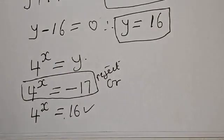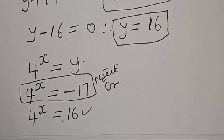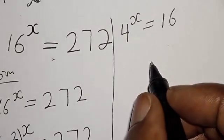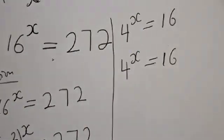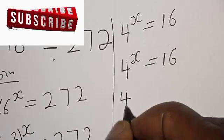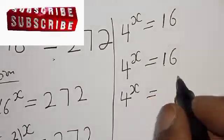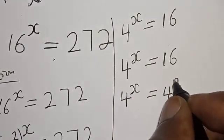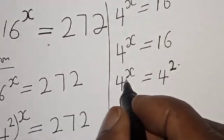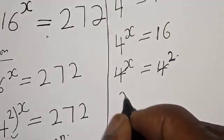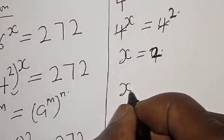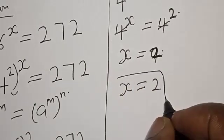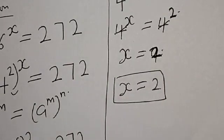This gives us the true value. We have 4 raised to power s is equal to 16, which is the same as 4 squared. Since they have the same base, the bases cancel and we have s is equal to 2. Therefore our final answer is s equals 2. You can check to confirm if your answer is right or wrong.